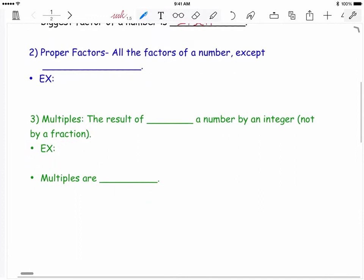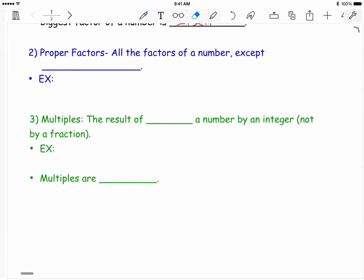The second word on this list is proper factors. This refers to all factors of a number except the number itself. Using the example above, the proper factors of 12 are 1, 2, 3, 4, and 6 only. You will not include 12 because it is the number itself.